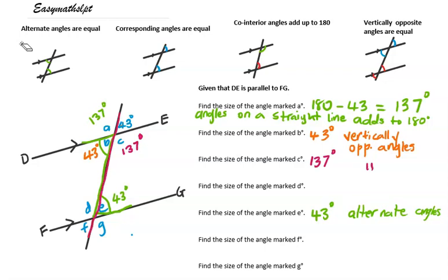However, we can use a different rule. D is corresponding to A - we can get an F shape. So if you want to say that they're corresponding, that's fine. You still get the same answer. But if you found E and then you want to say that D is on a straight line with E, that's also okay. You still get the same answer of 137 degrees.